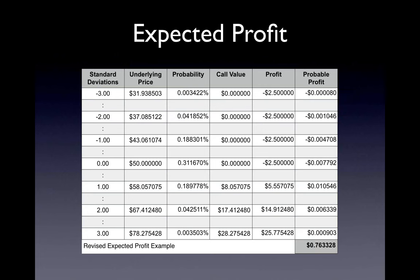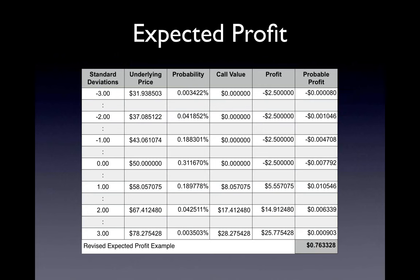This table shows a revision to the long call example with a new column showing the number of standard deviations. As the table shows, this long call still has a positive expectation. If the trader could buy a call like this many times, on average a profit of $76.33 per contract would be expected.